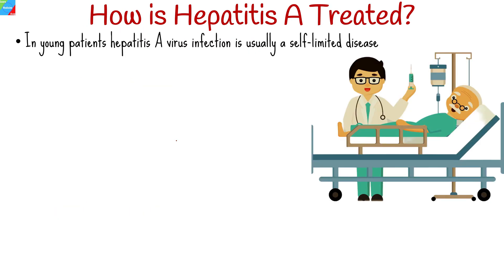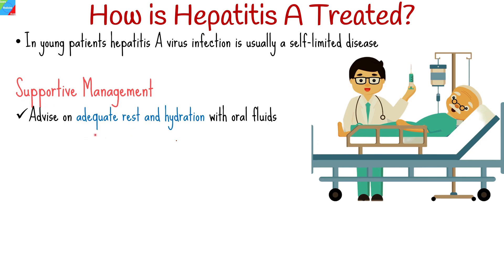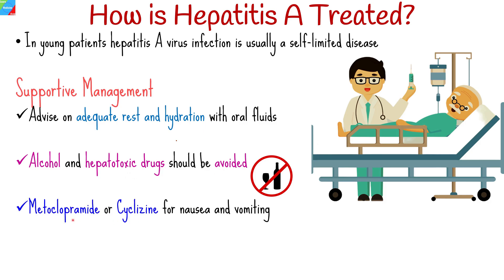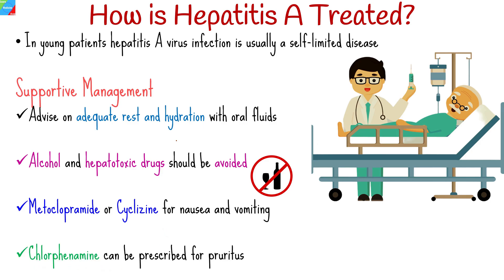In young patients, hepatitis A virus infection is usually a self-limited disease that does not become chronic and rarely results in death. Management is generally supportive during the acute illness. The patient is advised on adequate rest and hydration with oral fluids. Alcohol and hepatotoxic drugs should be avoided. For nausea and vomiting, metoclopramide or cyclizine can be given if there is no significant liver impairment. Chlorphenamine can be prescribed for pruritus in the absence of liver impairment.